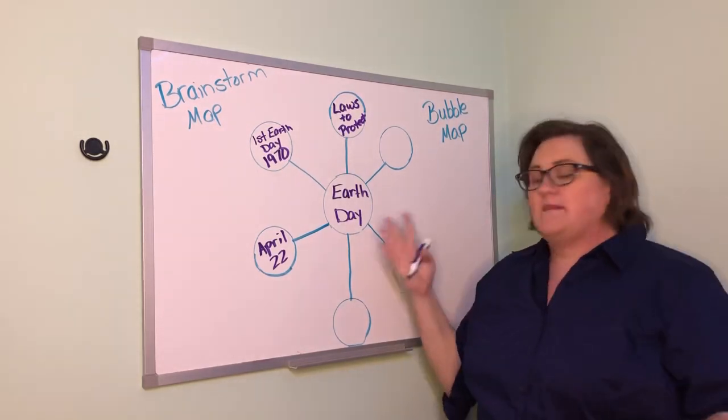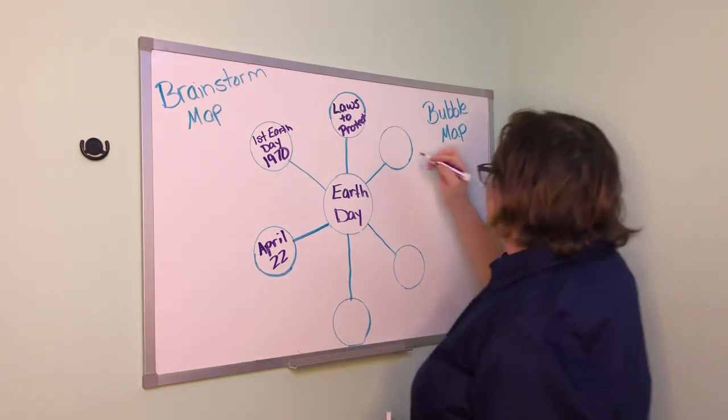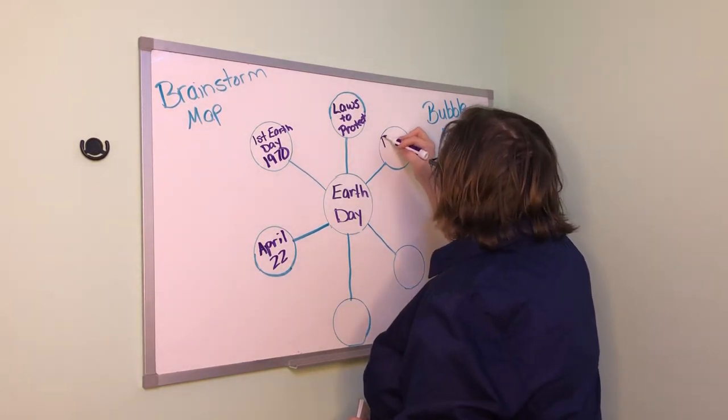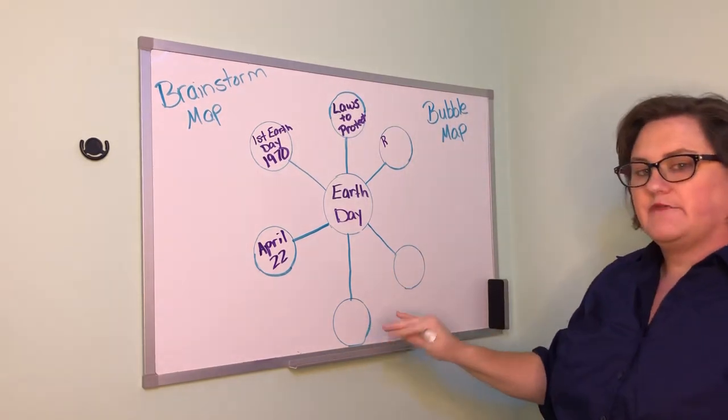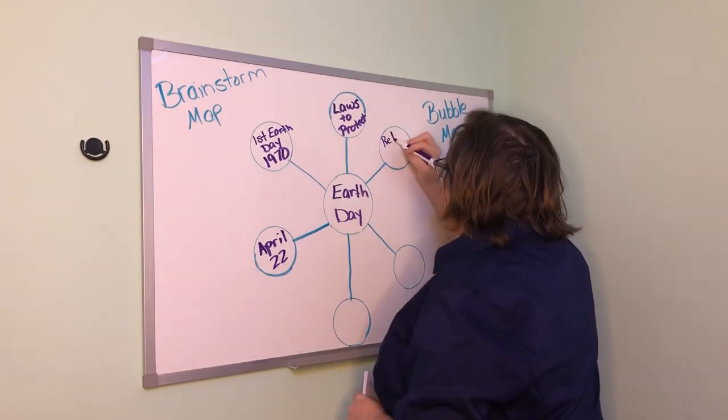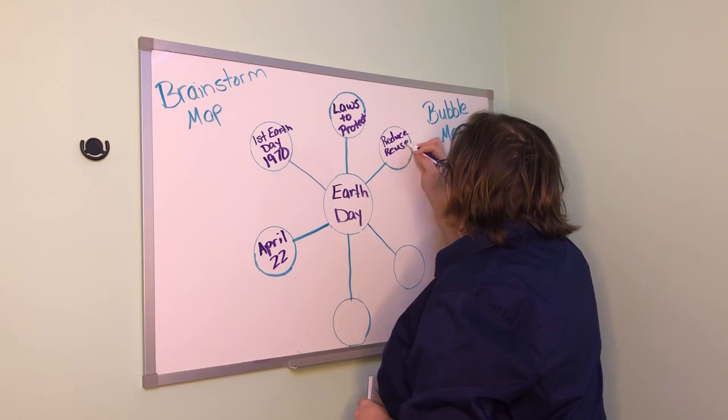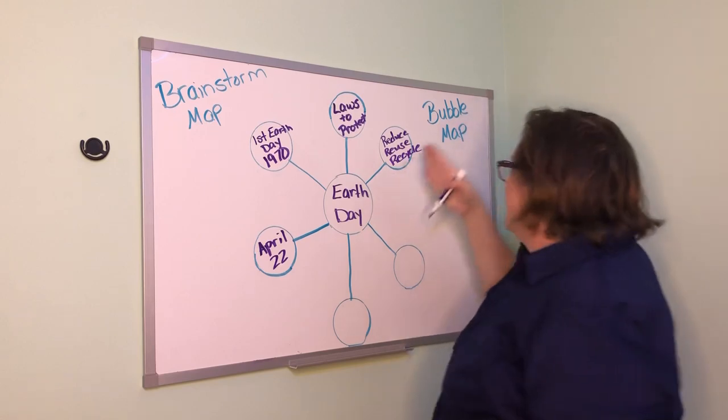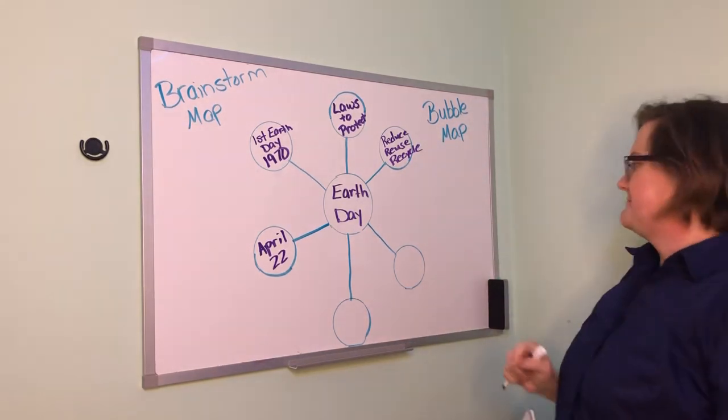When I was reading my book Earth Day, reduce, reuse, recycle, the three R's. So I'm going to write those. You could do one in each, but reduce, reuse, and recycle in our book kind of went together. So I'm going to put them all in one circle. Reduce, reuse, recycle. And if it goes outside of my circle a little bit, it's okay.